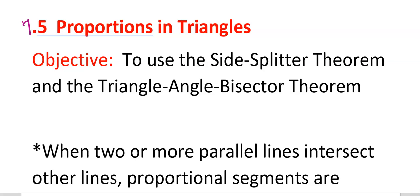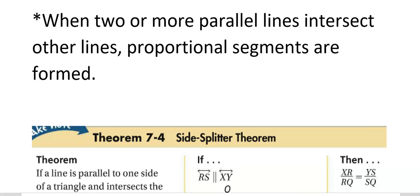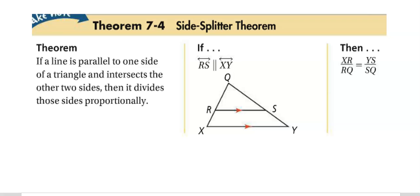Section 7.5: Proportions in Triangles. We're going to use the side splitter theorem and the triangle angle bisector theorems. When two or more parallel lines intersect other lines, proportional segments are formed.